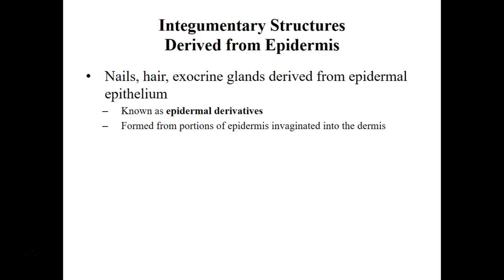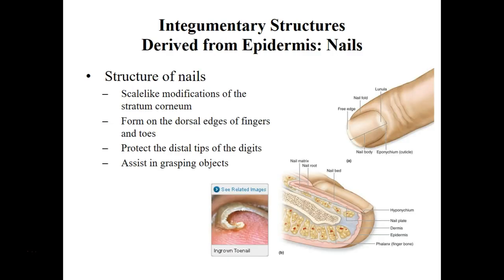Now let's talk about the derivatives of our skin. We have nails, hair, and glandular tissue. They're formed in or found in the dermis but have some openings to the epidermis. Nails are modifications of the stratum corneum, so they become really hard, thicker stratum corneum.